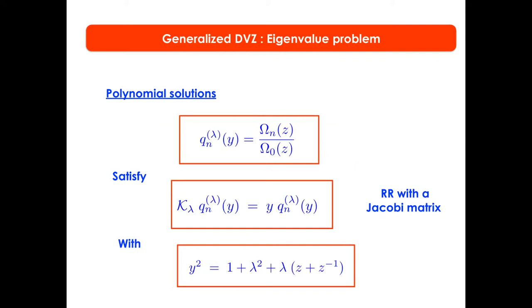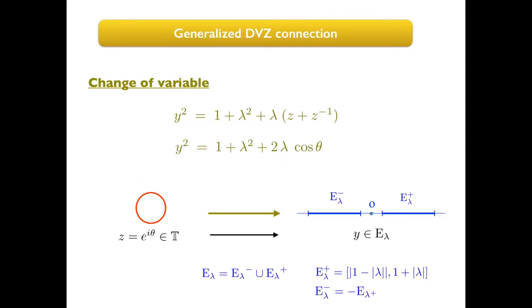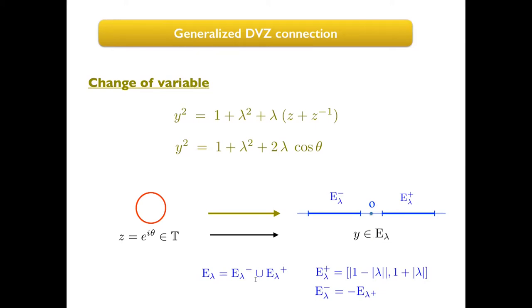We are interested in the polynomial solutions. I introduce polynomials q_n(lambda, y), defined as the ratio of omega_n and omega_c. It is important to notice that these polynomials are eigenfunctions of the operator K lambda. Notice that y and zeta are related in a specific way. Then by using a change of variable, we have immediately a result saying that y can be represented in terms of zeta in this way, and with this transformation, you represent the unit circle on the real line as the union of two symmetric intervals with respect to the origin.